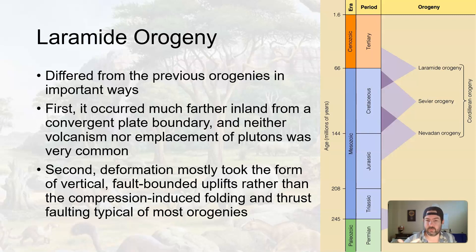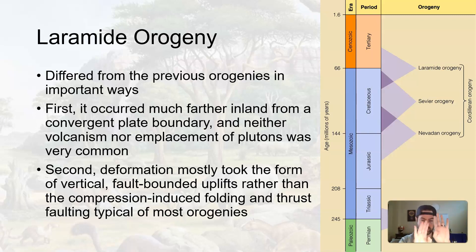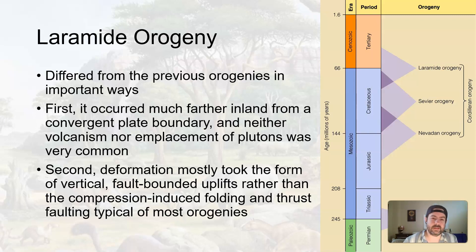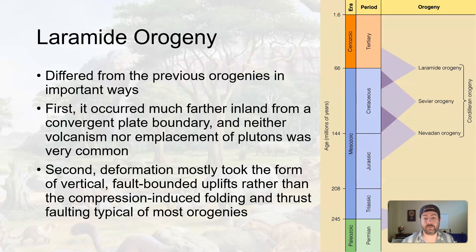Neither volcanism nor emplacement of large plutons, like what we see more coastally, occurred. Number two, the form of deformation mostly took the form of vertical faults where big blocks of earth were broken and moved up or down, rather than the compressional folding and thrust faulting we typically see at convergent boundaries — like when the Appalachians formed as Pangaea was coming together and those layers were folded and thrusted up. That's not what we see in the Laramide orogeny, which is famous for the Rocky Mountains.